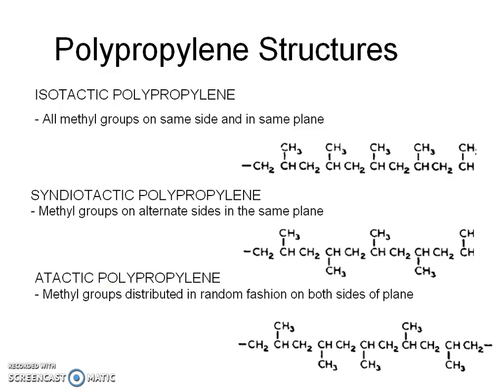In atactic polypropylene, methyl groups are distributed in a random fashion on both sides of the plane. That is, there is no regular pattern or order of methyl group distribution, as seen in the molecular structure.